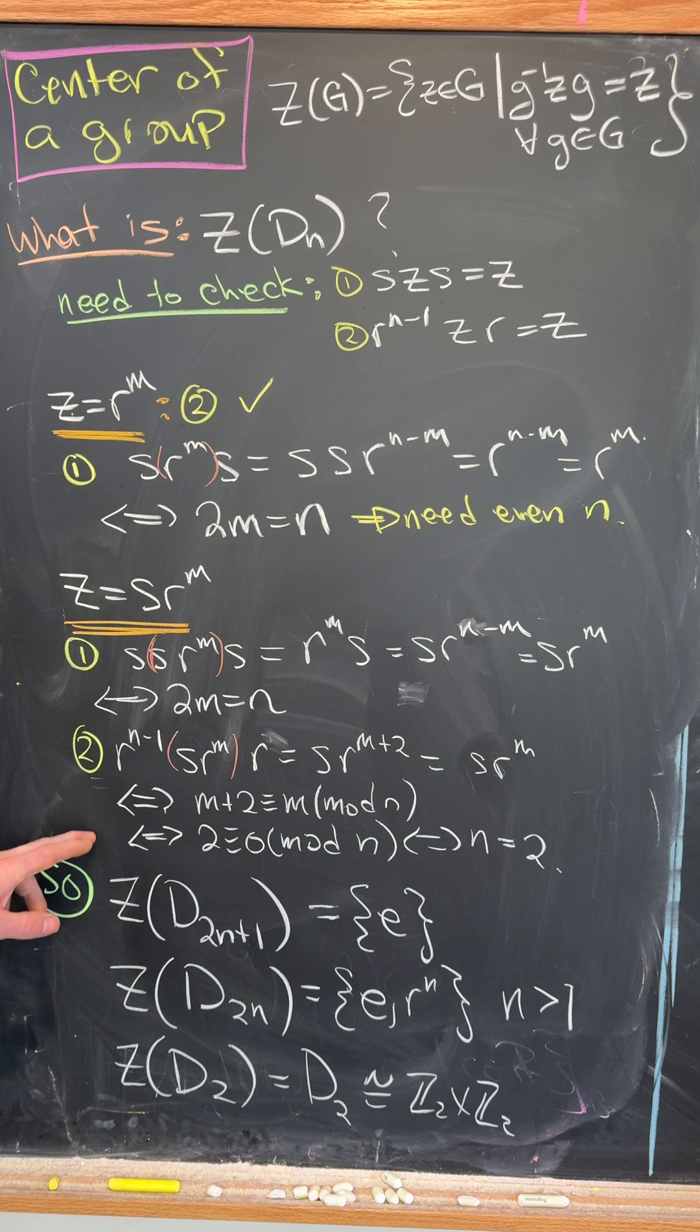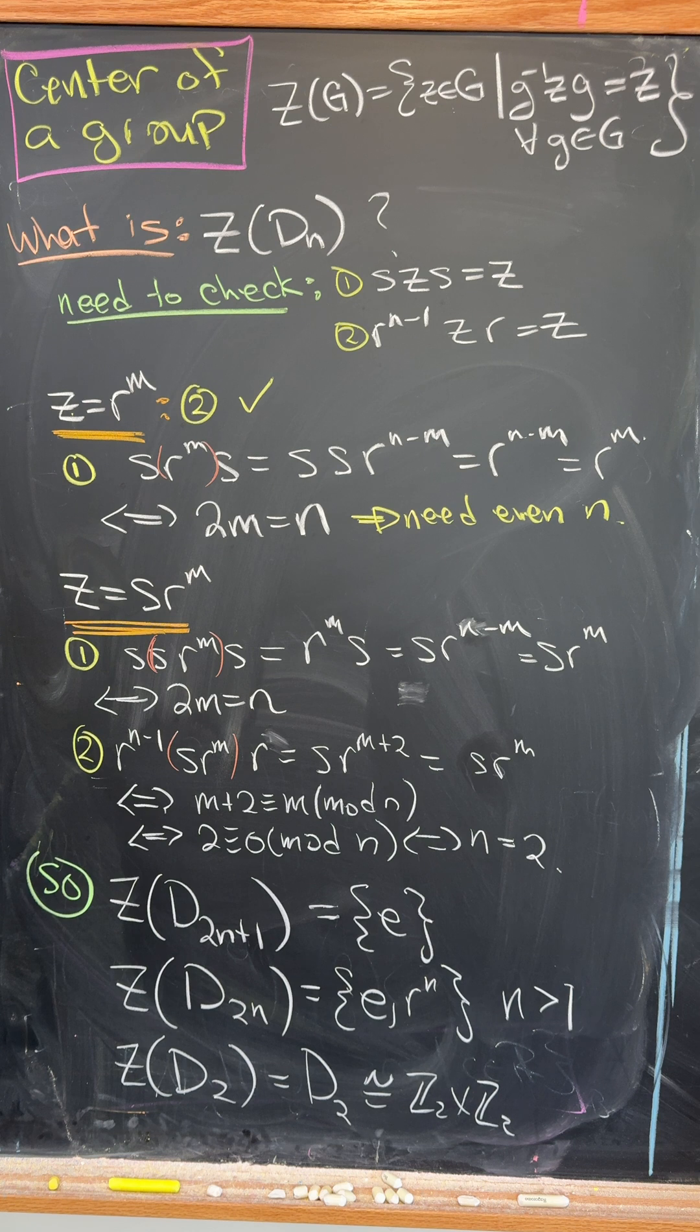But to commute with R, well, that simplifies down to N is equal to two, which is not very interesting. So most of the time you never get a reflection in the center.